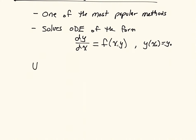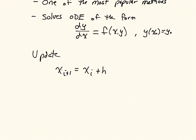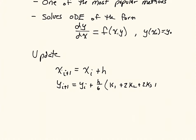The update equation is given by the following. Similar to Euler's method, the update for x, the independent variable, is x-i plus 1 equals x-i plus h, where h is our step size. And the update for y is y-i plus 1 equals y-i plus h over 6 times k1 plus 2k2 plus 2k3 plus k4.